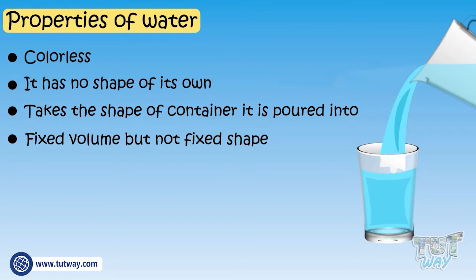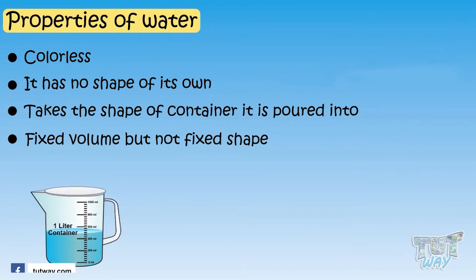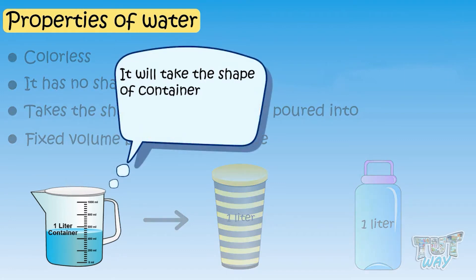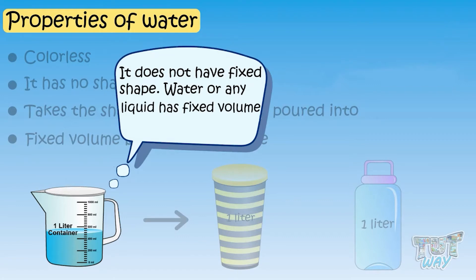Let's try to understand this. If you have one liter of water, it will remain one liter of water, no matter which container you keep it in. So its volume is fixed, but it will take the shape of the container in which you keep it. That is, it does not have a fixed shape. So water, or any liquid, has a fixed volume, but not a fixed shape.